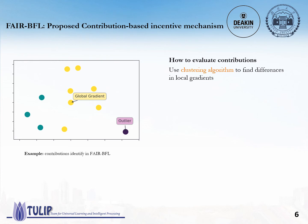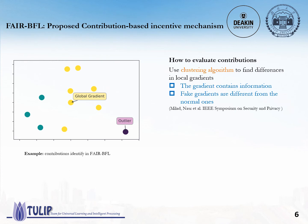Let me explain our contribution-based incentive mechanism. The key idea is to use a clustering algorithm to find differences in local gradients, based on two observations. First, the gradients contain information. Second, the fake gradients differ from the normal ones — for example, they are far away from the normal ones in distance. Note that FireBFL allows you to use any clustering algorithm. Here, let me use DBSCAN as an example. First, we use FedAverage to compute a global gradient and put it together with all the local gradients of the current round, then perform clustering.